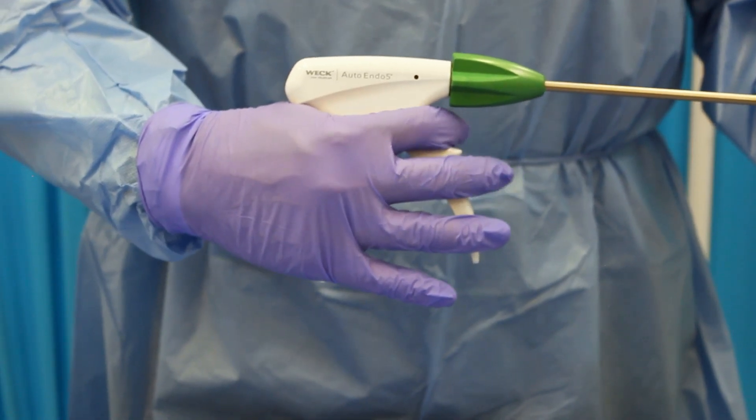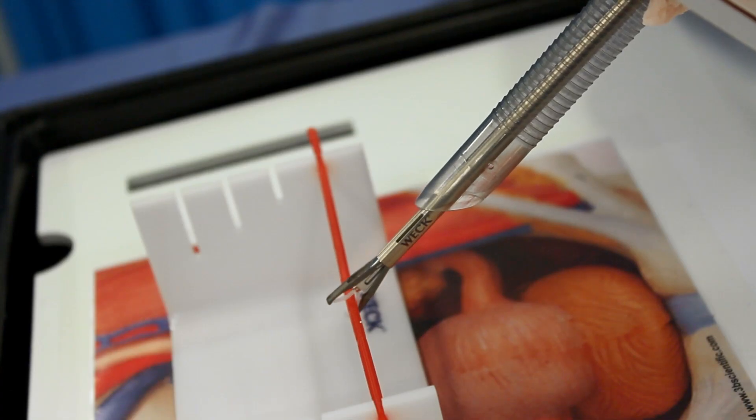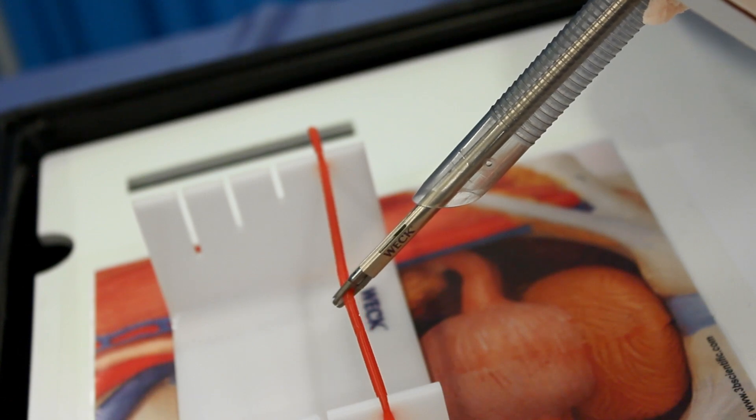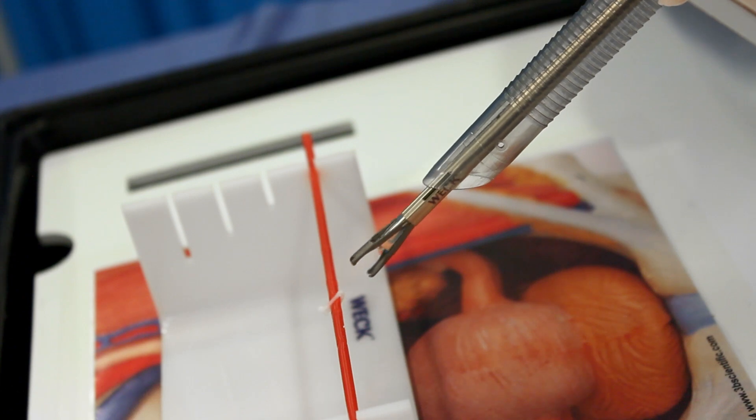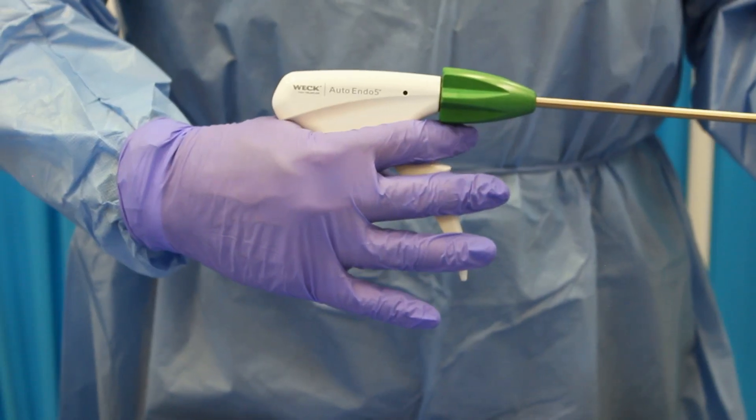Step 4: Fully compress the applier trigger so the jaws close and the clip locks. An audible click will confirm that clip closure is complete. Fully release pressure on the trigger. This allows the applier to return to a reset position. An audible click will confirm that the applier has returned to the reset position.